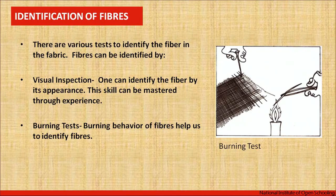The first identification method is visual examination — one can identify the fiber by its appearance, such as whether it is scaly, smooth, or has a twist present. This skill can be mastered through experience. There are various tests to identify the fiber in the fabric.